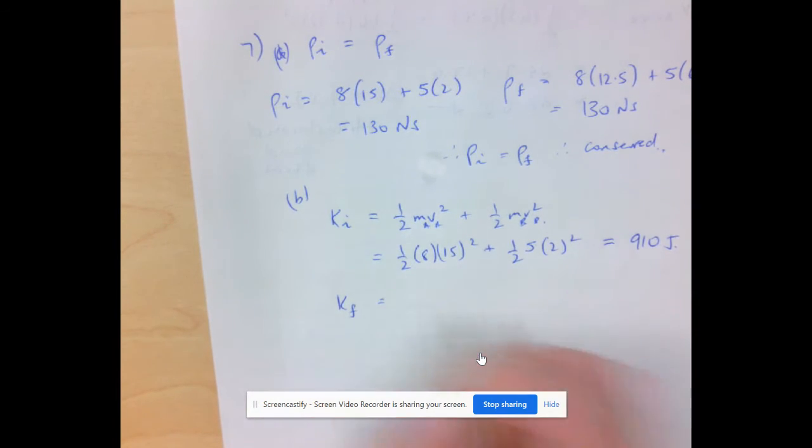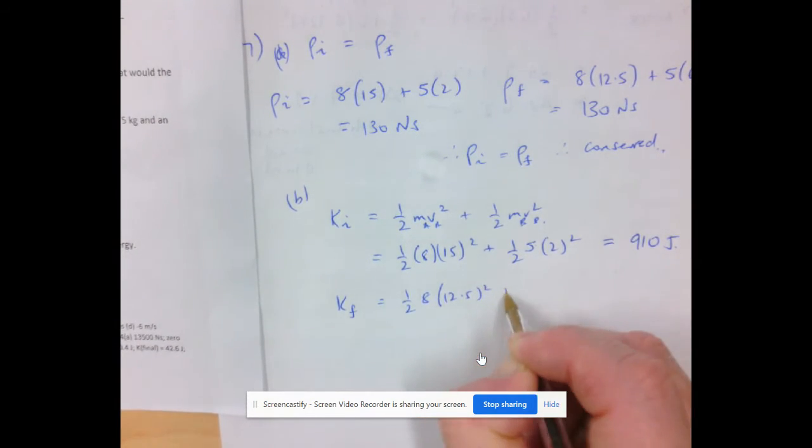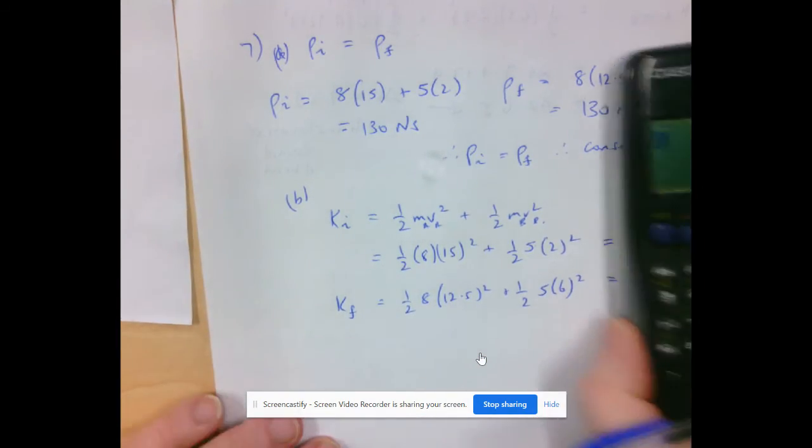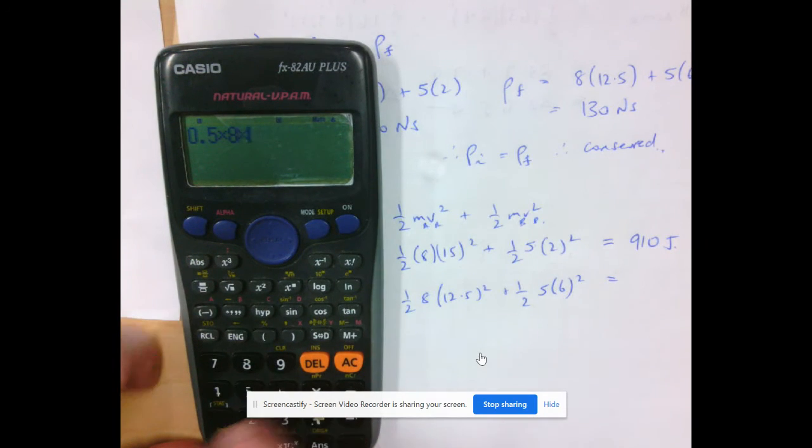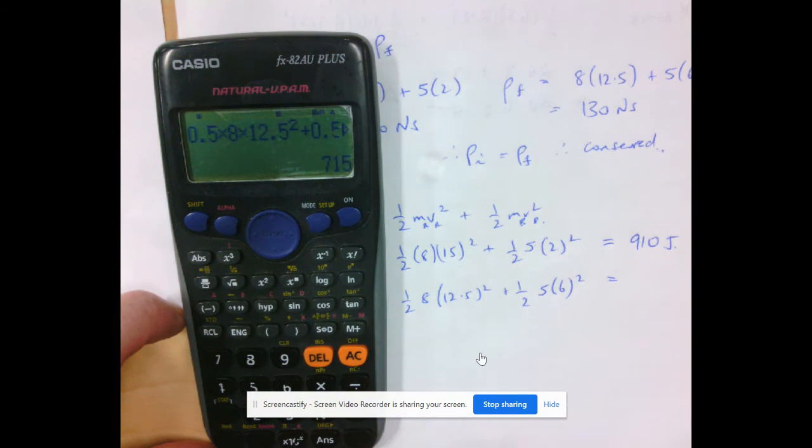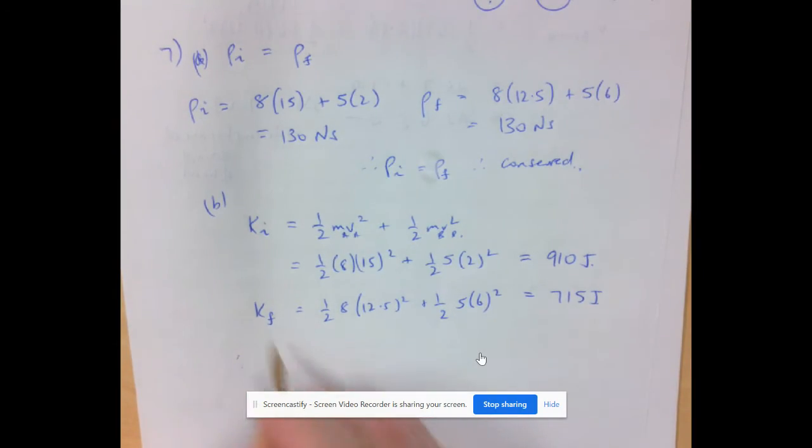Doing the same thing with the final will be half times 8, the 15 meters per second has now reduced to 12.5 squared, plus the other one has gone up to 6 squared. Calculating that one, 0.5 times 8 times 12.5 squared plus 0.5 times 5 times 6 squared, that's 715 joules. Therefore, kinetic energy at the initial is not equal to the kinetic energy at the final. Therefore, kinetic energy is not conserved.